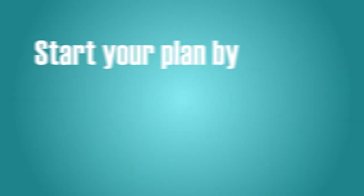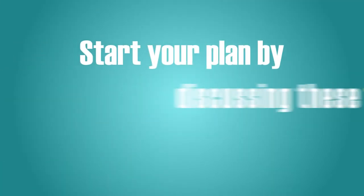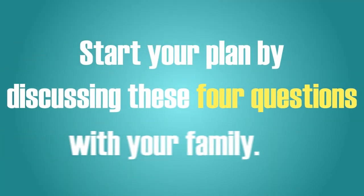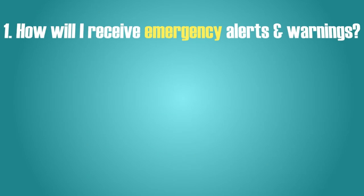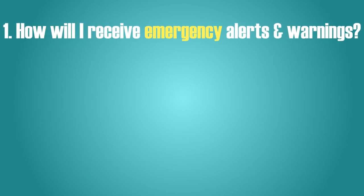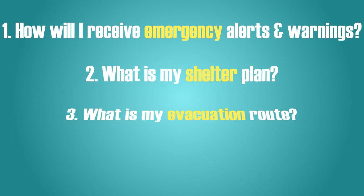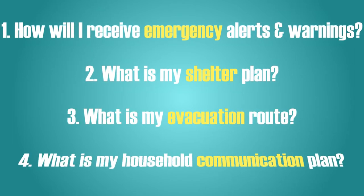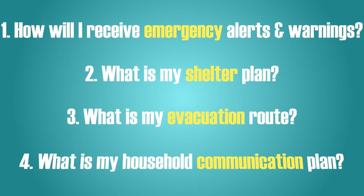Step 1: Start your plan by discussing these four questions with your family. 1. How will I receive emergency alerts and warnings? 2. What is my shelter plan? 3. What is my evacuation route? And 4. What is my household communication plan?